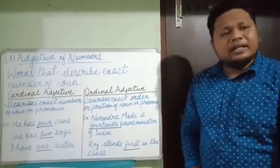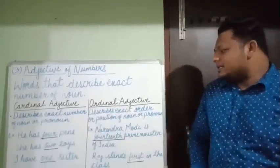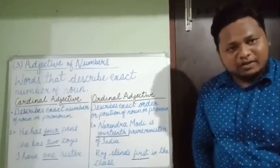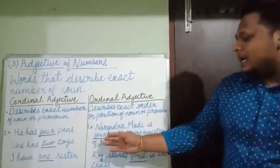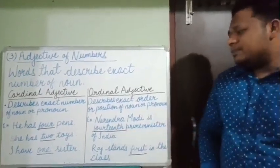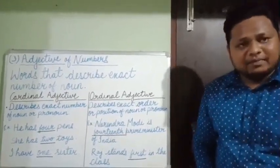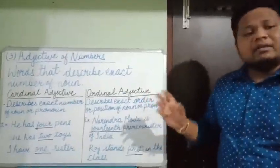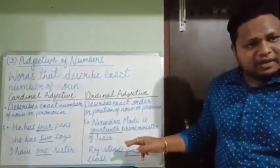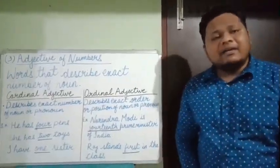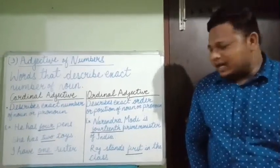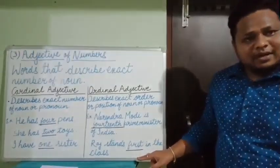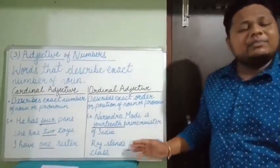The second type is ordinal adjective. It describes the exact order or position of a noun or pronoun. For example: Narendra Modi is the 14th Prime Minister of India — here we have the position, that is 14th. Raj stands first in the class — here again we have the position of Raj, that is first. So this is about adjective of numbers.